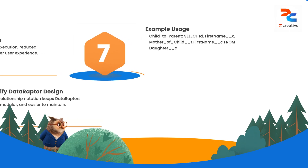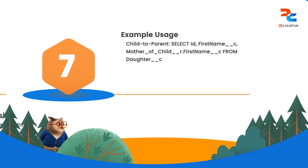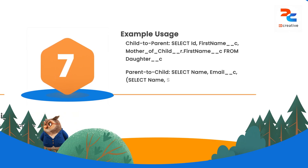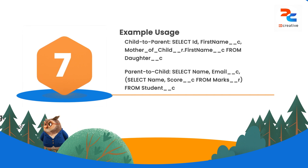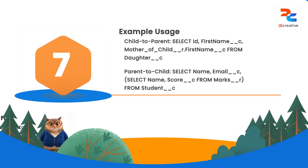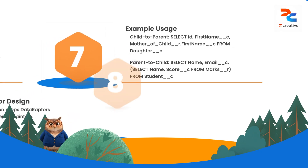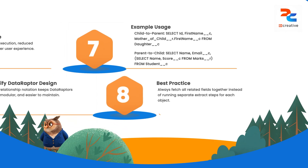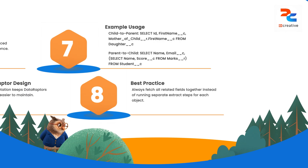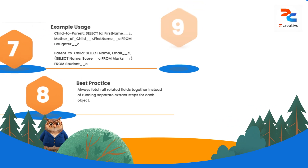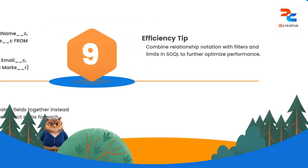For child-to-parent relationships, you simply use dot notation, like 'Account.Name' when querying the Contact object, to pull the related account's name. For parent-to-child relationships, you can use a nested sub-query, such as 'SELECT Id, LastName FROM Contacts', to retrieve all related contacts for each account in one go. Instead of asking for data in separate requests, you bundle it into a single, highly optimized call, resulting in faster and more efficient data retrieval. By mastering this technique, you can dramatically improve the speed and efficiency of your OmniStudio configurations.